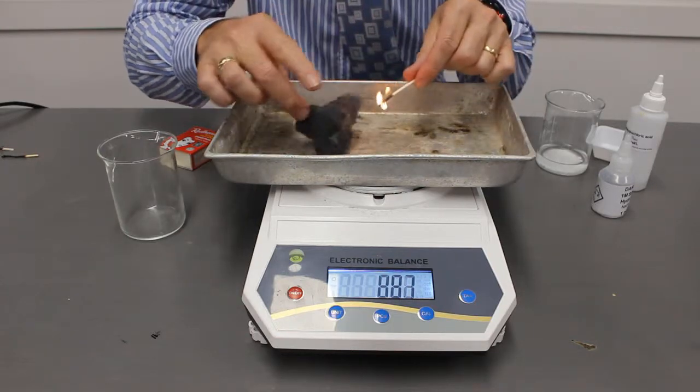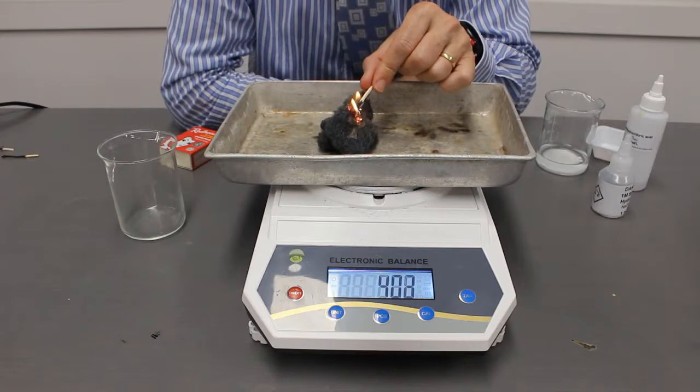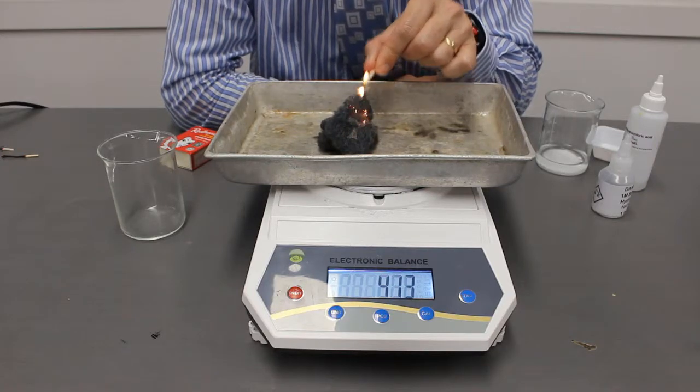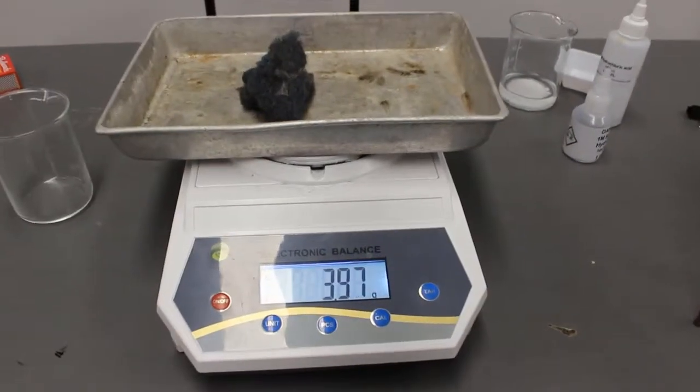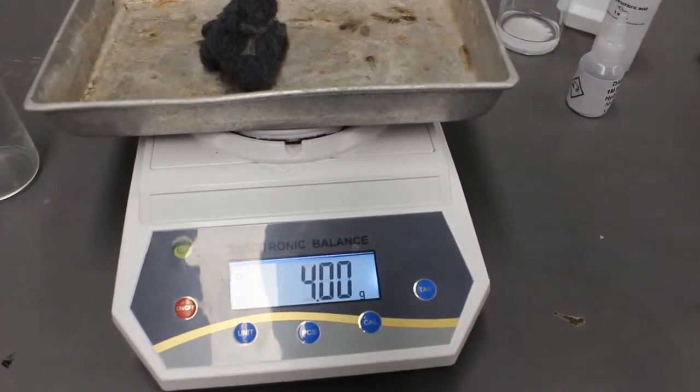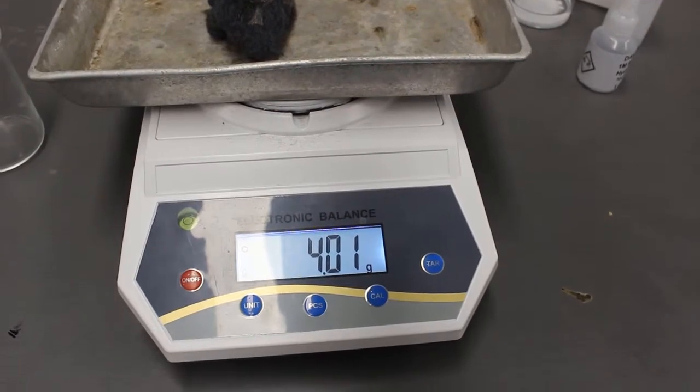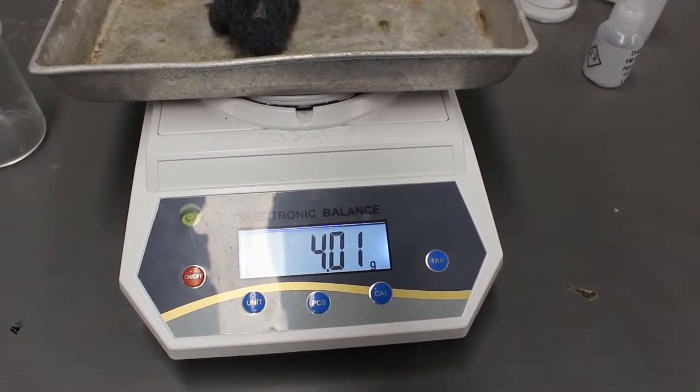So we're burning it. This is called a combustion reaction. What is happening when we burn it? What's going to happen to the mass? So we now have a mass of 3.0. It's actually gone up to 4.01 grams.